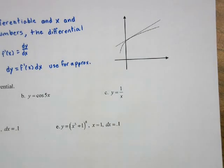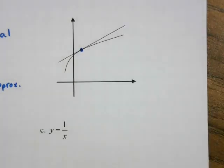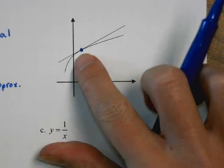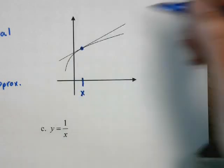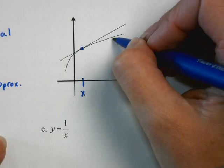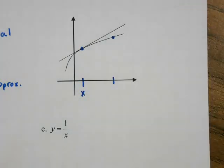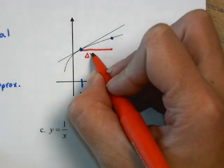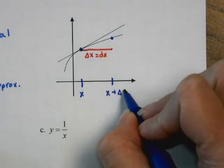Using this graph to illustrate, essentially what we're doing is using the tangent line to approximate a function close to a certain point. We have a point where the function and the tangent line meet. The tangent line is pretty close to the graph for small changes. The distance from this point to the x value here is delta x, which is also dx, so this is x plus whatever that change is.